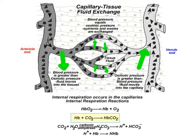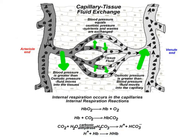Hemoglobin binds to the carbon dioxide that is diffusing out of the cell into the bloodstream to form carbaminohemoglobin. The hemoglobin is also buffering the blood by taking up excess hydrogen ions to form reduced hemoglobin. But where did all the hydrogen ions come from? Some of the carbon dioxide that diffuses out of the cells of the body will react with water to temporarily form carbonic acid.